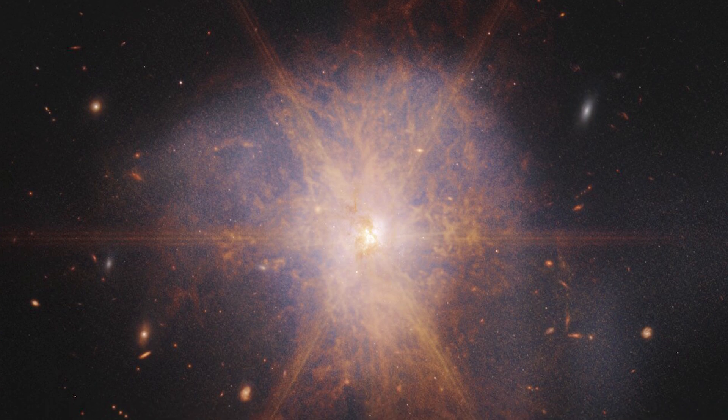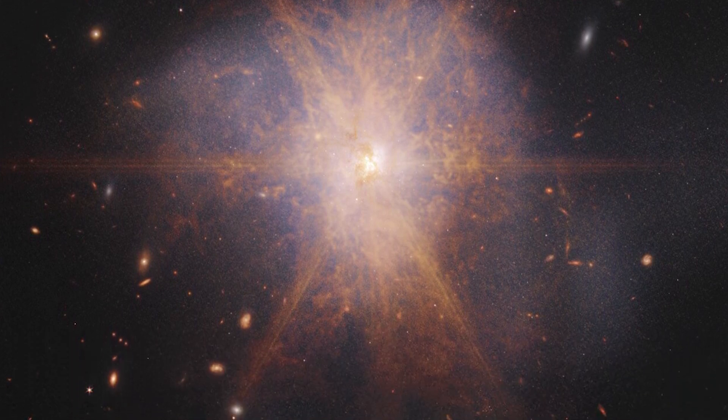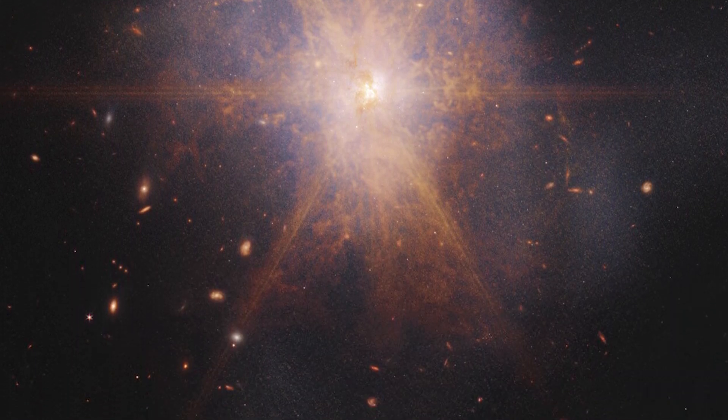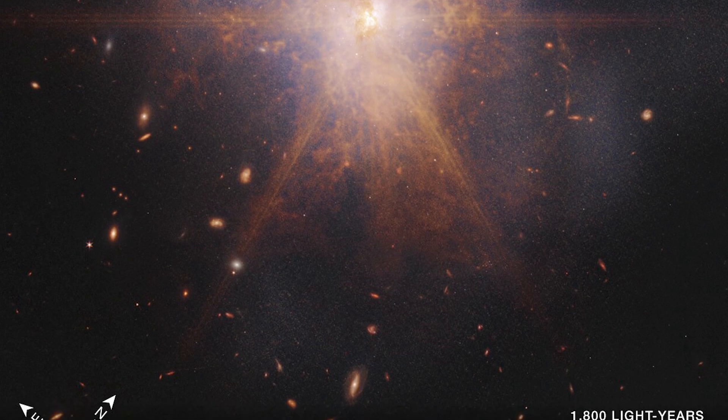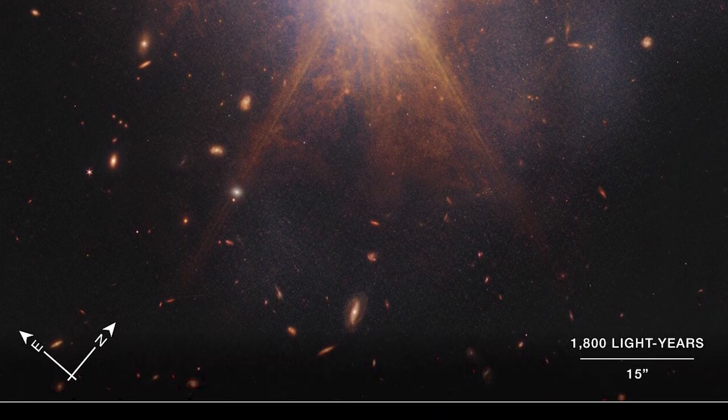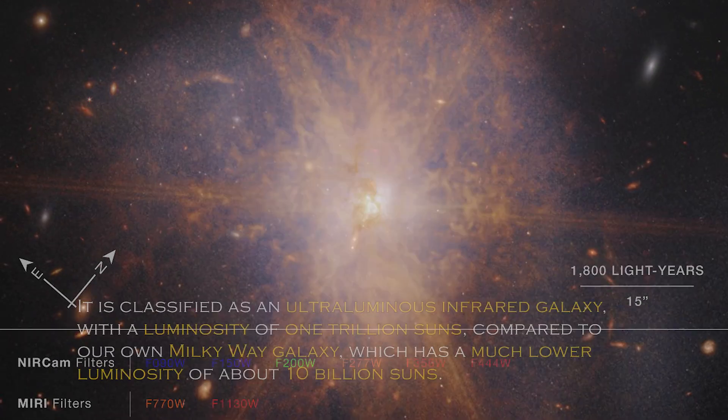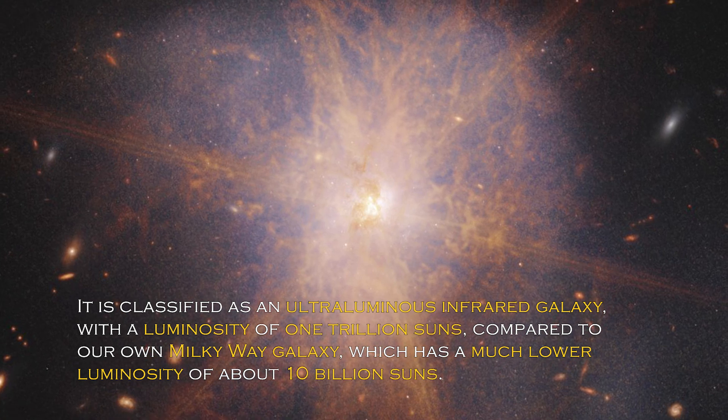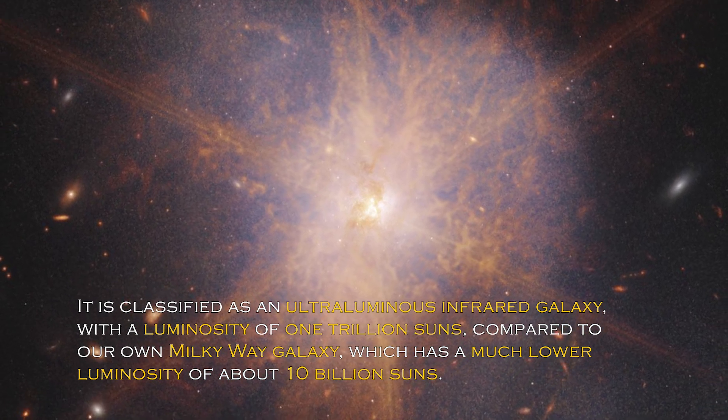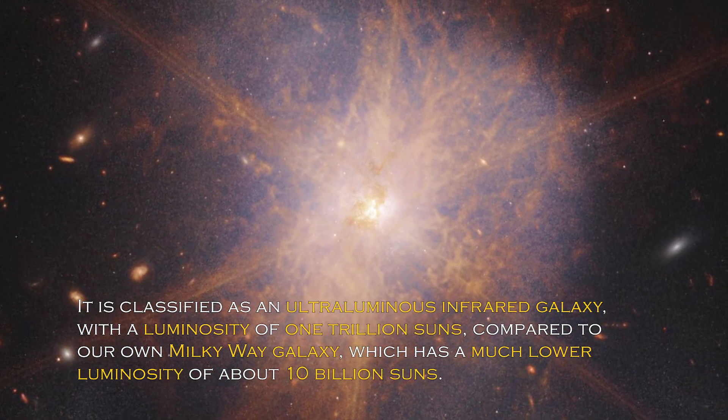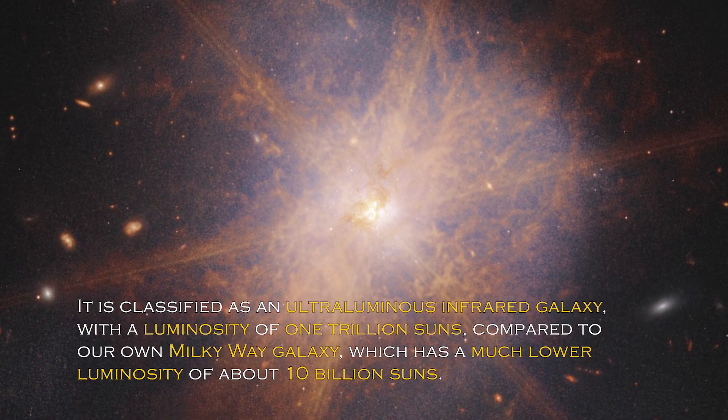When two spiral galaxies merge, the phenomenon known as ARP 220 shines brightest in the infrared, making it perfect for observation by the James Webb Space Telescope. It is classified as an ultra-luminous infrared galaxy, with a luminosity of one trillion suns compared to our own galaxy, the Milky Way, which has much lower luminosity of about 10 billion suns.